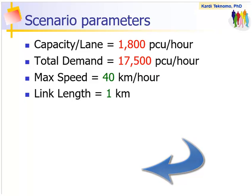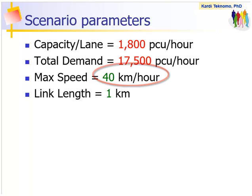We can put the network scenarios into capacity matrices. Here are the scenario parameters. We assume the capacity per lane is 1,800 PCU per hour. The total demand is 17,500 PCU per hour. PCU is the passenger car unit, which is the equivalent of all vehicle types into car. The maximum speed is 40 km per hour and the link length is 1 km.